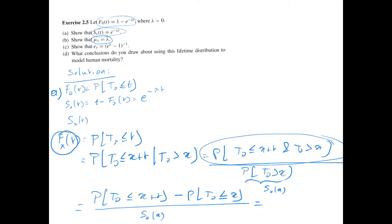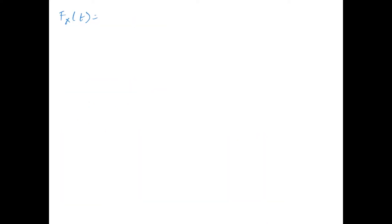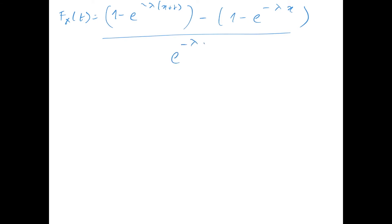We have now expressed the distribution function fxt in terms of the random variable t0, so we have f0(x+t) minus f0(x) divided by s0(x). Using the expressions for f0 and s0, we find that fxt equals 1 minus e to the power minus lambda times (x plus t), minus 1 minus e to the power minus lambda x, divided by e to the power minus lambda x. Simplifying, you find 1 minus e to the power minus lambda t.